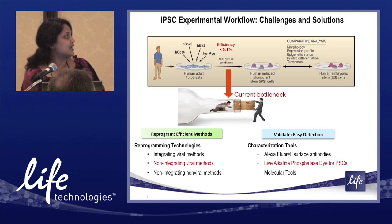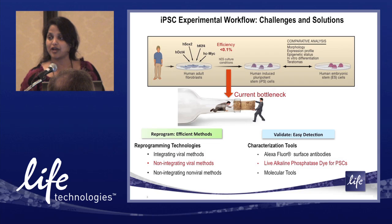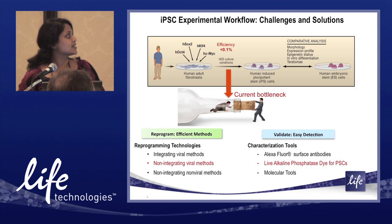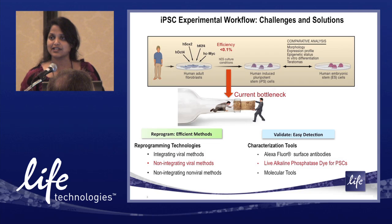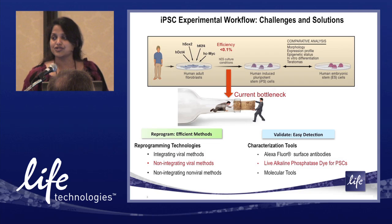The biggest bottleneck right now is the efficiency of iPSC formation. Depending on what kinds of cells you start with, the efficiency is really low. The second bottleneck is how do you detect these emerging iPSC colonies? Depending on the expertise of the users in the field of pluripotent stem cells, people can either pick colonies easily or there's always an issue of which clones to place your bet on.